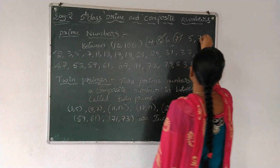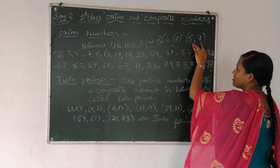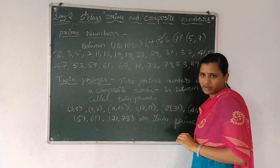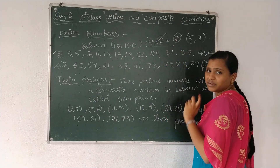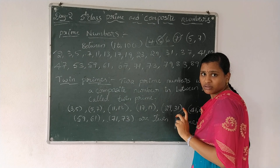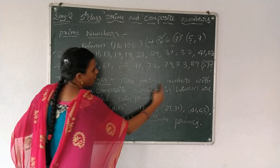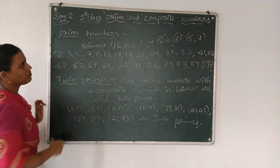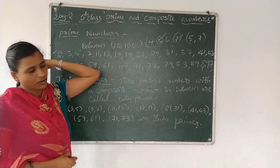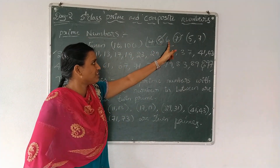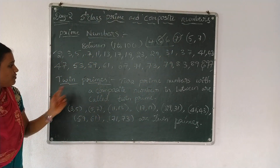5 and 7 is a twin prime number. In between 2 prime numbers there is a composite number. So 5 and 7 is a twin prime number.